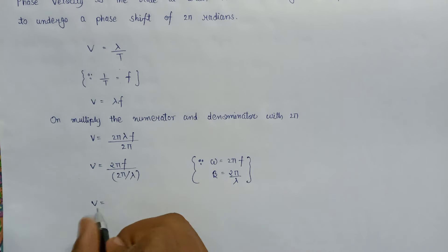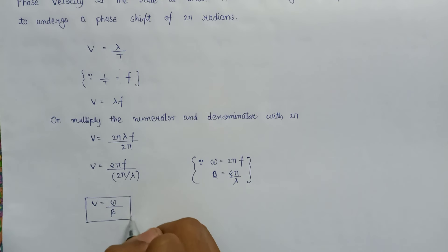In place of 2πf we write ω, and in case of 2π/λ we write β. So this is the equation for phase velocity.